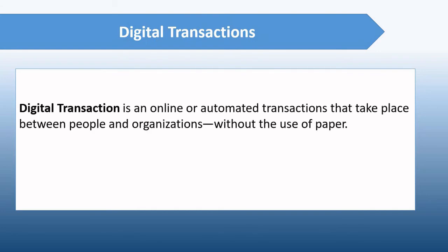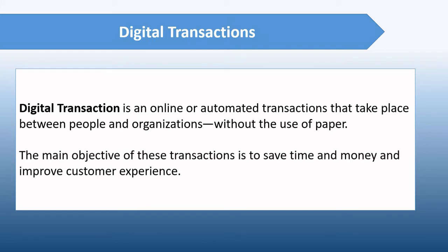Another component of ICT is digital transaction. A digital transaction is an online or automated transaction that takes place between people and organizations without the use of paper. The main objective is to save time, money, and improve customer experience. An example is the enrollment process of CSU — you save time because enrollment is easy with just a few clicks. Unlike face-to-face enrollment where you need to stand in a long line, digital transactions also save money since the process is automated, saving you on fare, lunch, and other expenses.